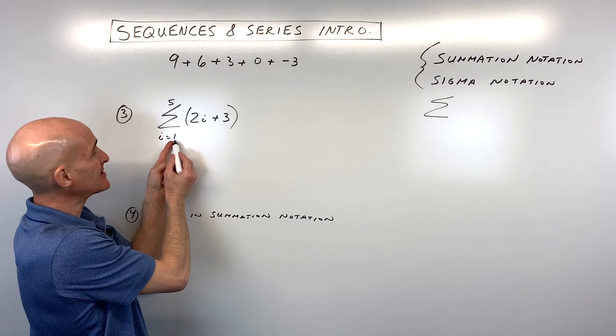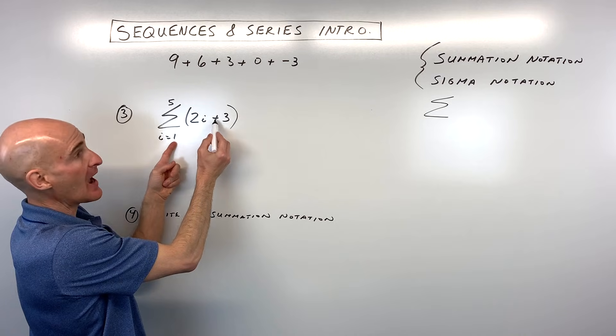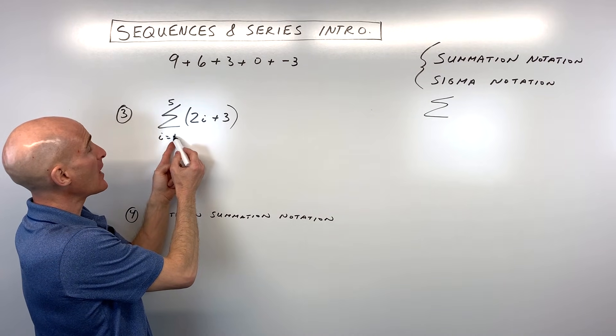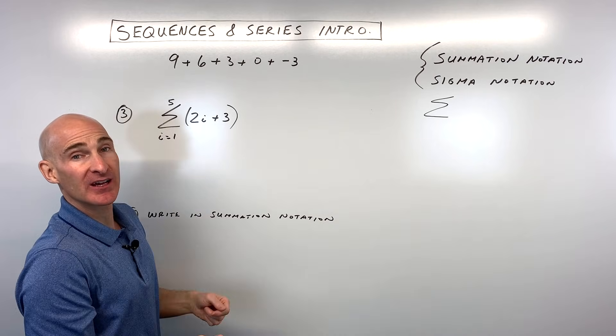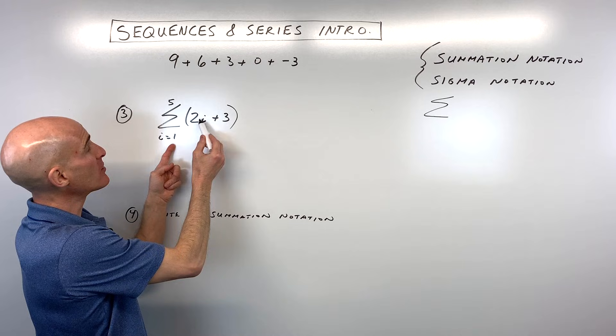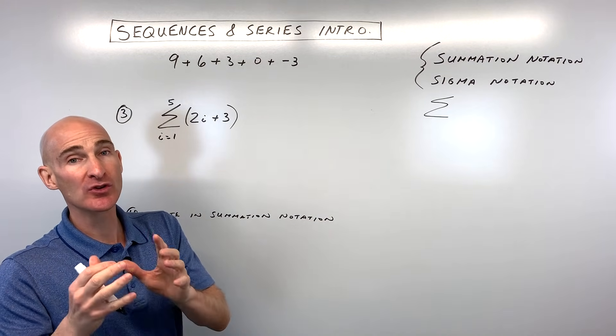So we already talked about how this is the sum. This is the index here. See how i equals 1? And what you do is you put 1 in for i, and you find that value of that term. And then you work your way up sequentially, like consecutively, until you get to this top number here. So we're going to put 1 in, then 2 in, then 3 in, then 4 in, all the way up to 5, and we're going to add up all those terms.